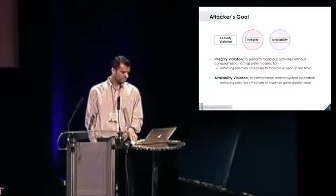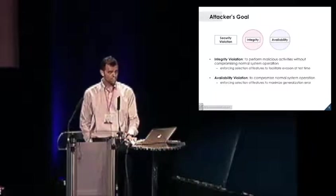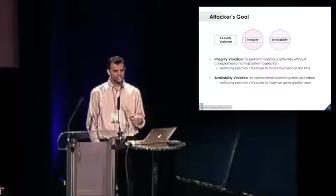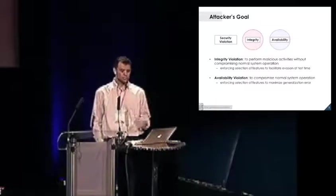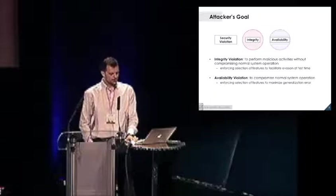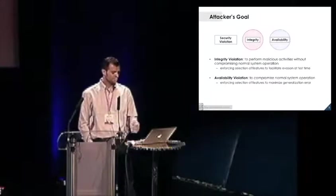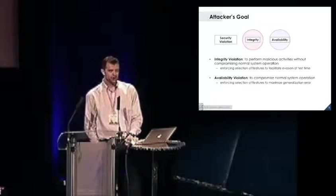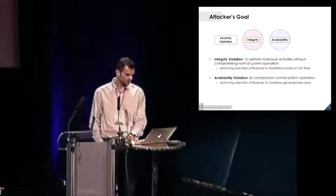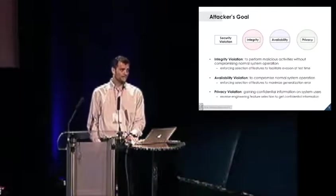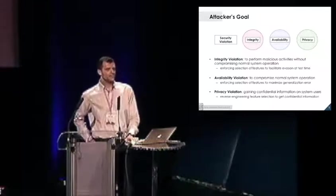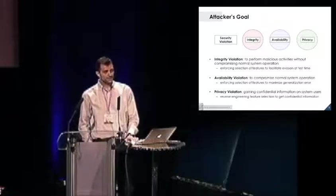We may have an availability violation, which is exactly the opposite. So here the goal is to cause a denial of service, to have legitimate users unable to use the system. The goal is to compromise the system operation. In this case, for feature selection, it amounts to enforce the selection of features in order to maximize the error of the system. We may also have privacy violations if one is capable of reverse engineering the feature selection process and somehow infer confidential information about the system users.